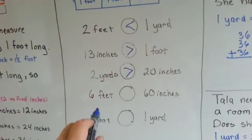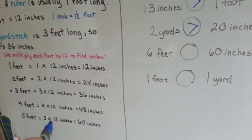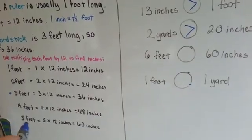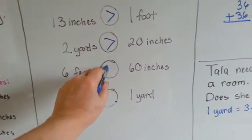Which is bigger, six feet or 60 inches? Well, remember we did five times 12 is 60 inches, so that's five feet. So five feet is smaller than six feet. Six feet is bigger.